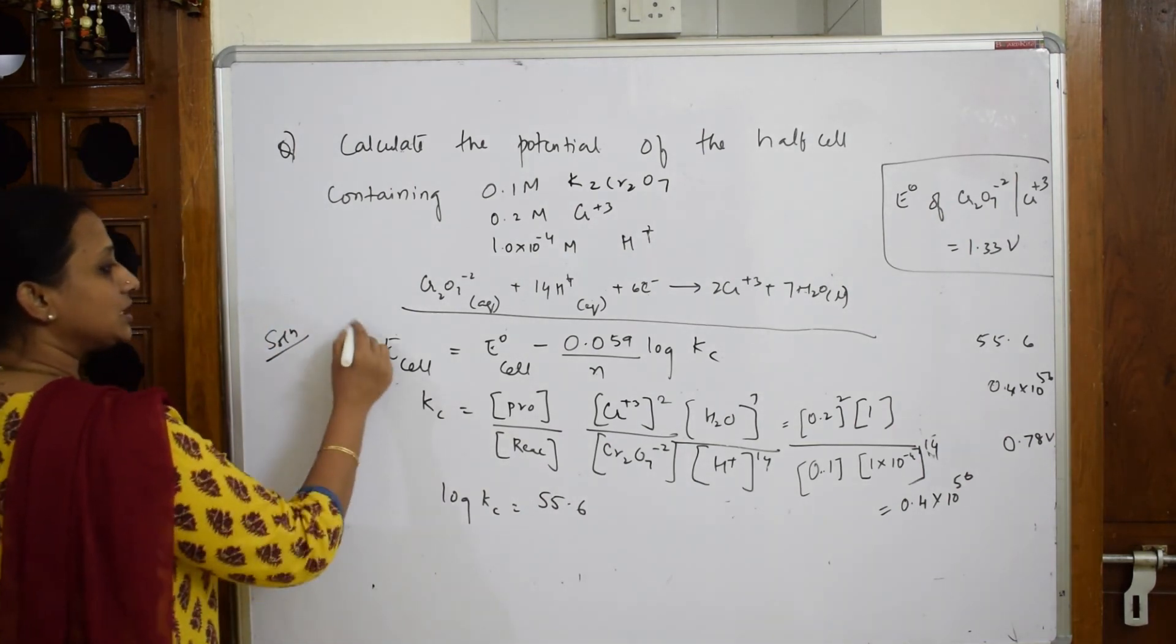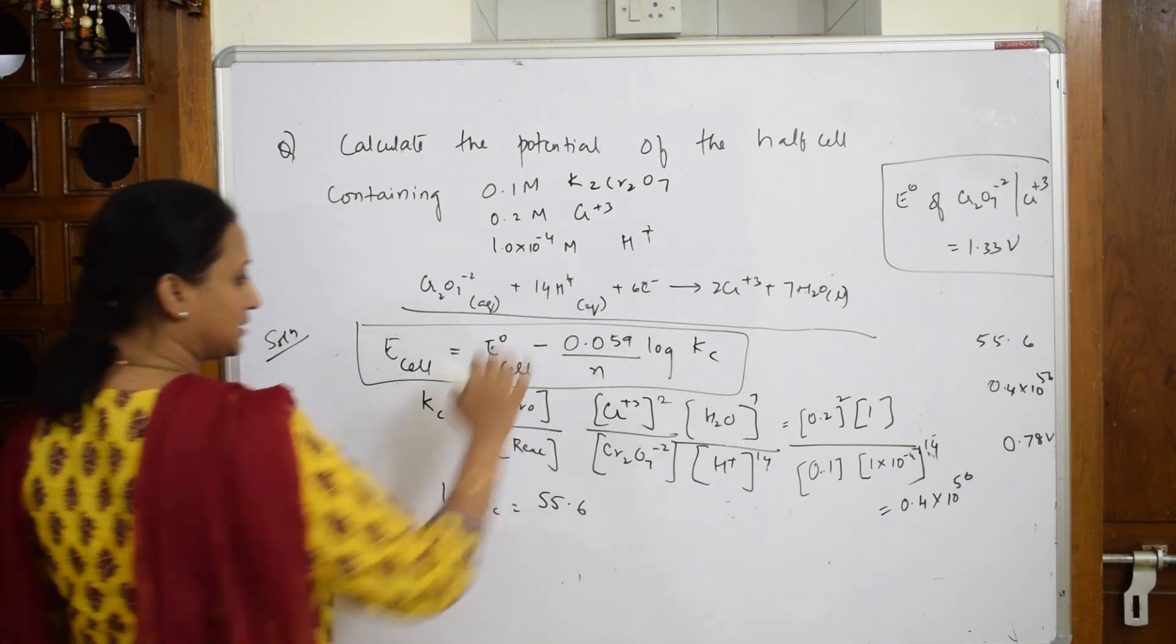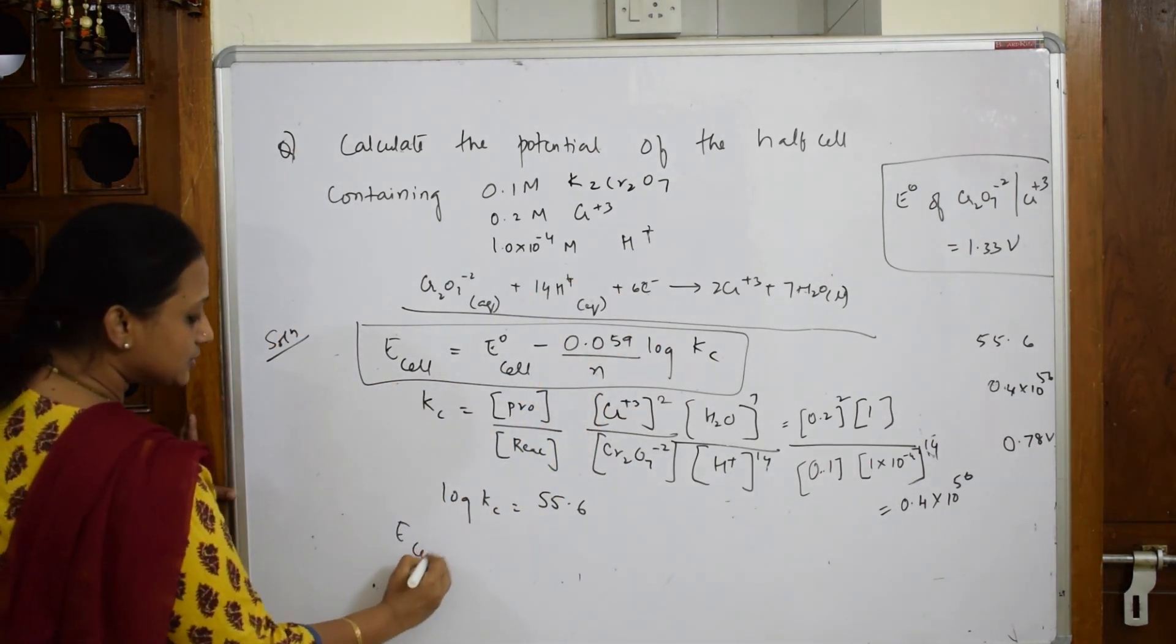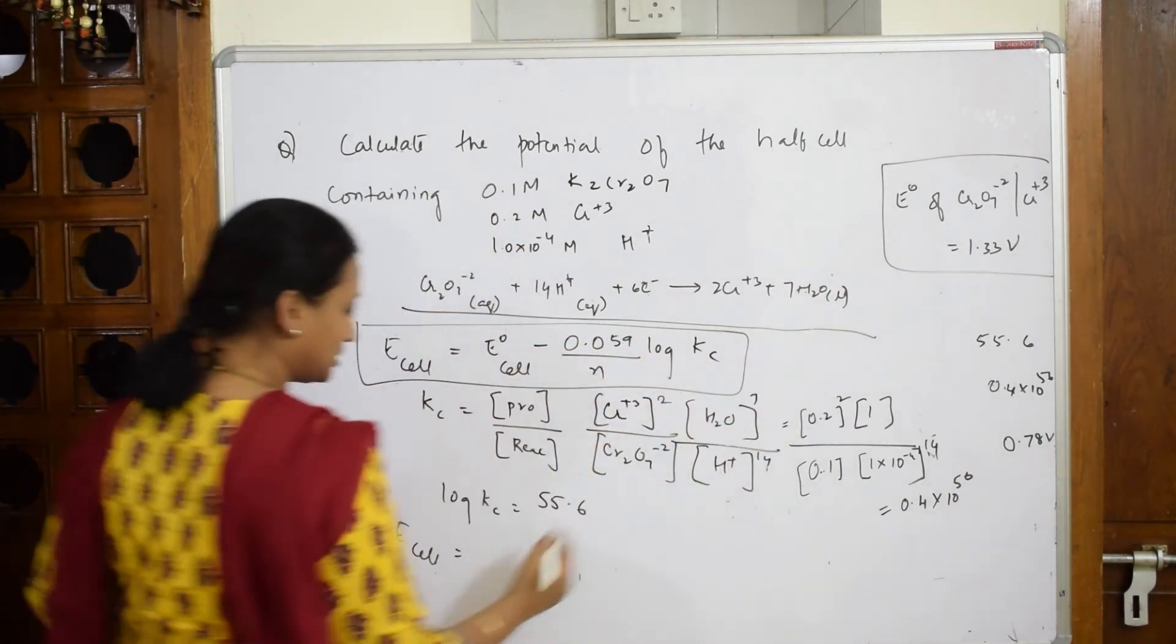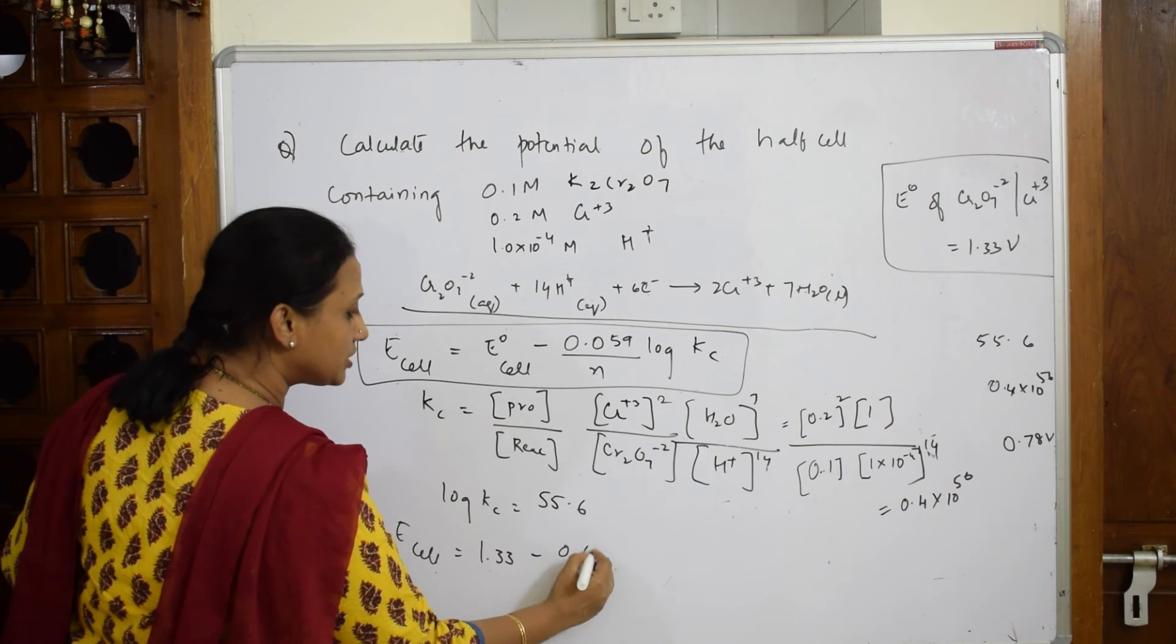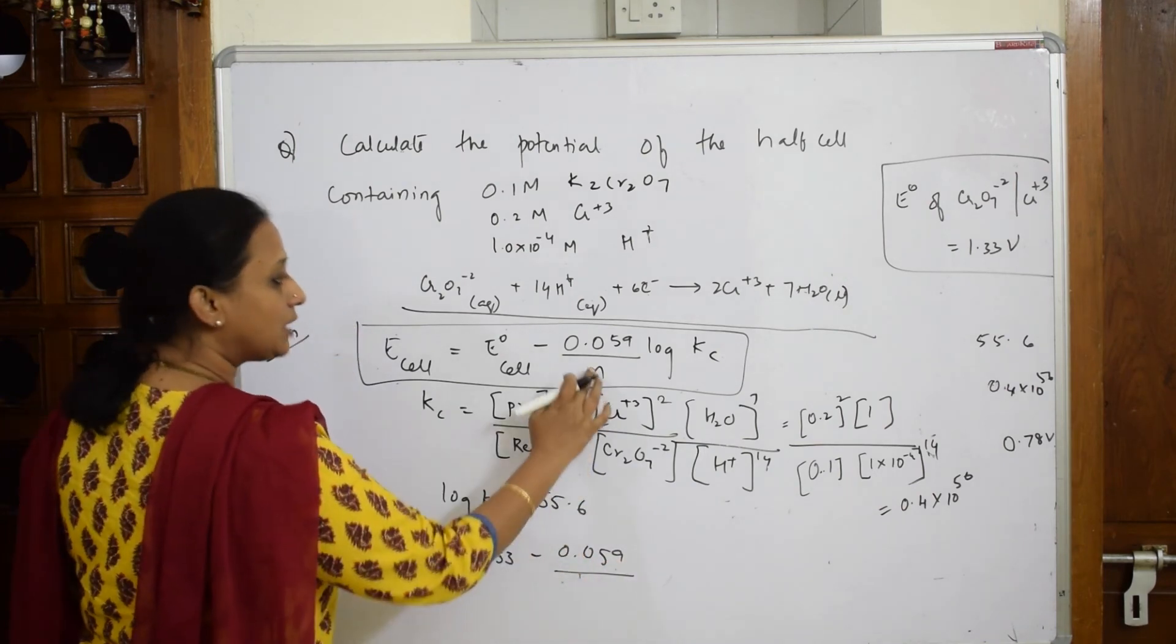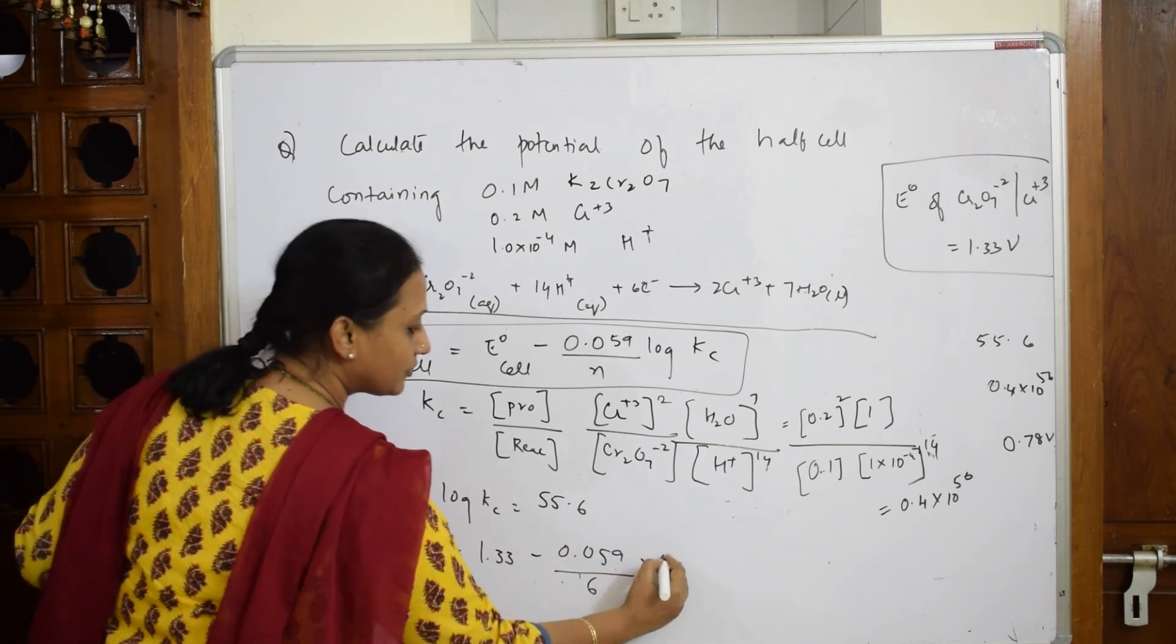Now substitute this whole thing in this formula. Hope you have understood why did I take this formula here. So E cell = E° cell. How much is given to us? 1.33. 1.33 - 0.059. And how many electrons have transacted? 6 electrons into 55.6.